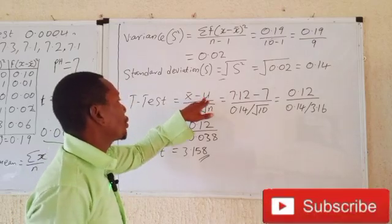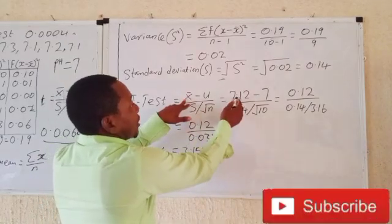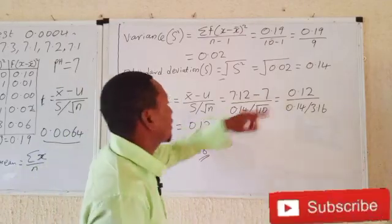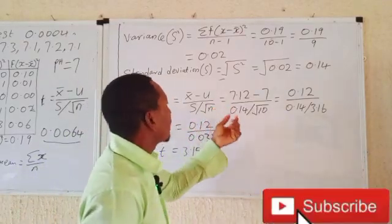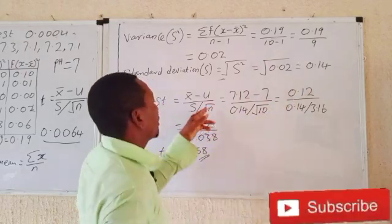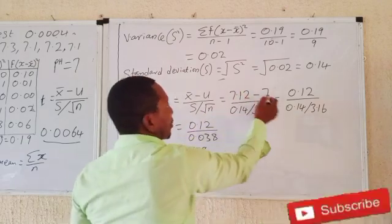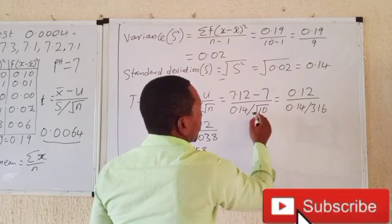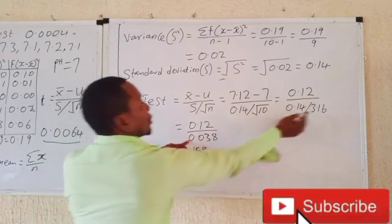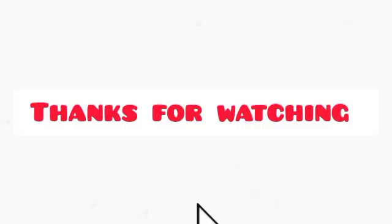Now apply the t-test formula: t = (sample mean − population mean) / (standard deviation / √n). The sample mean is 7.12, the population mean given in the question is 7.0, the standard deviation is the value just calculated, and n = 10 so √10 = 3.16. Dividing the standard deviation by 3.16 and then dividing the numerator by that result gives the final t-test value.